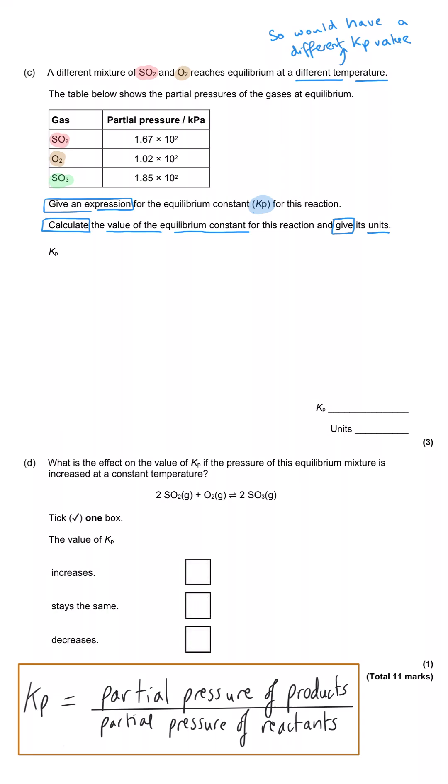So to construct this, what we always need to do is we need to refer to the equation. So I've rewritten that along the top. And so you always take the products and put that on the top of the expression. And so you write the partial pressure of SO3. Now the coefficient in the equation is a 2 in front of the SO3, so this needs to be squared. I usually like to put brackets around the partial pressure term when I'm squaring it in particular, just so I can get that differentiation between the 3 of the SO3 and the 2 for the squared.